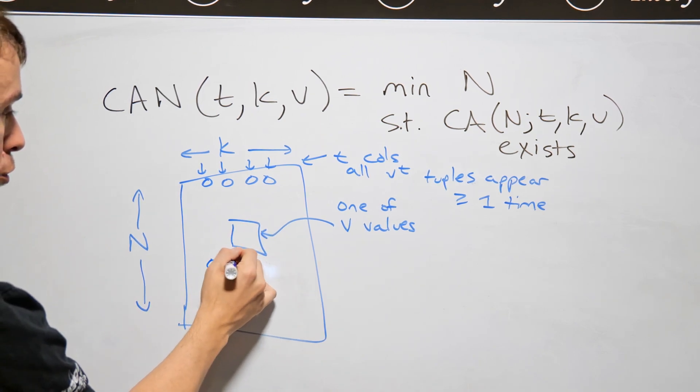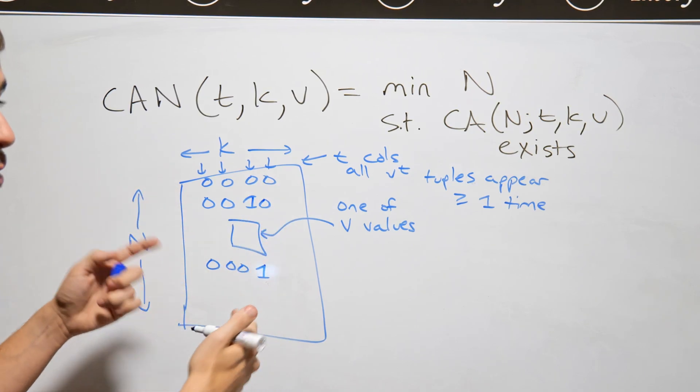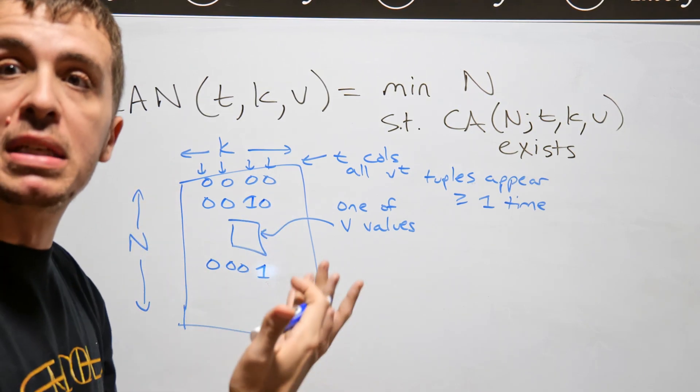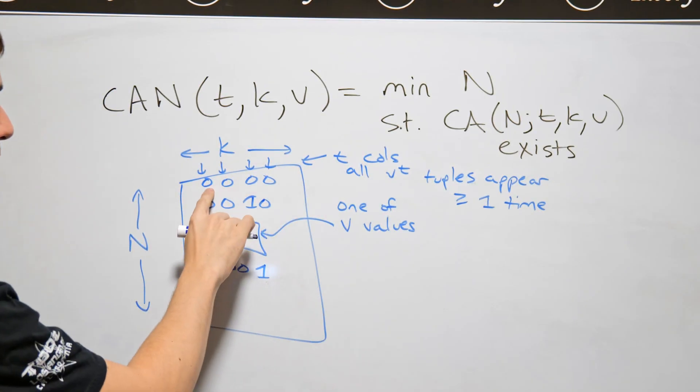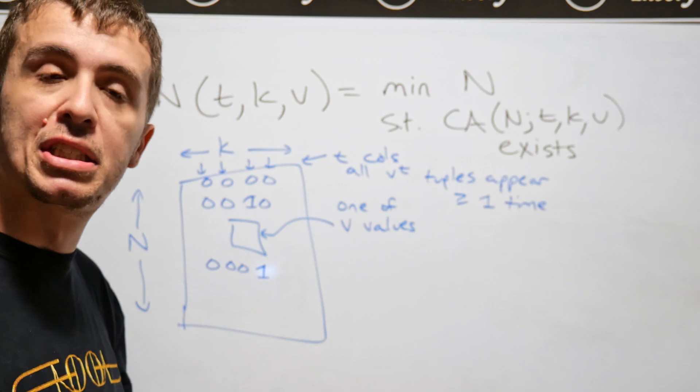And then I need to see 0, 0, 0, 1, 0, 0, etc. And in this particular case, there will be 16 possible 4 tuples because I have two choices for each one of them. So 2 times 2 times 2 times 2 is 16.